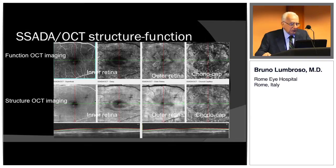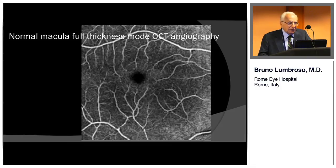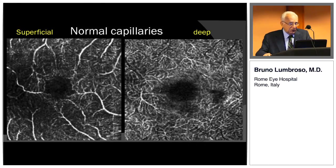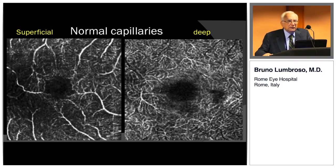As Tony explained, in the SADA OCT AngioView we can see function imaging and structure imaging separately, or overlaid. Here is a normal macula in full thickness mode, showing overlaid superficial and deeper retinal networks. Separately, we see normal capillaries at two levels — superficial and deep — which are very different. In retinal disease, they take on different aspects.